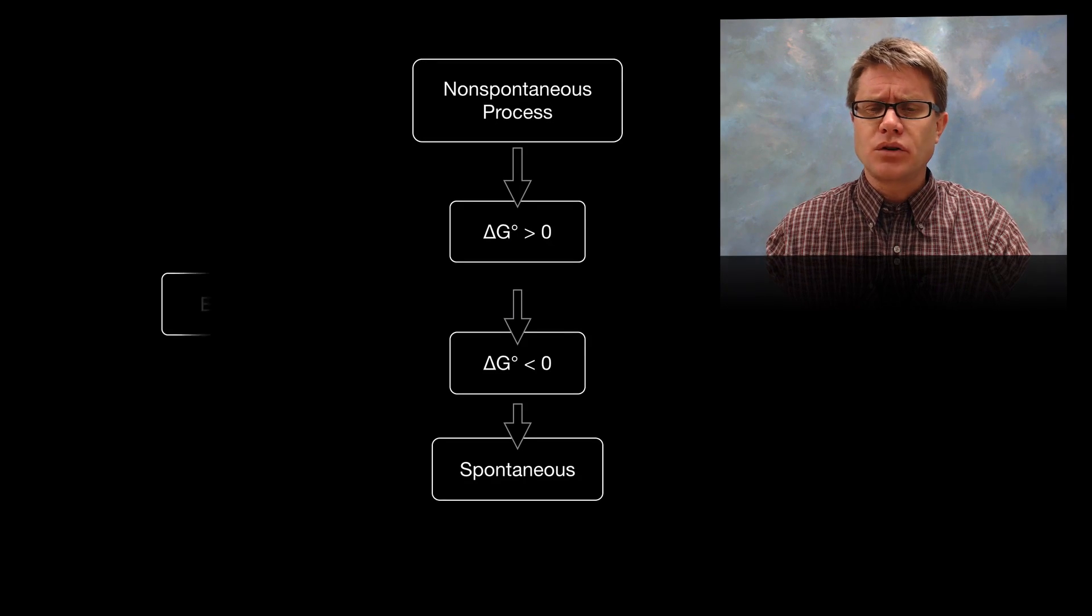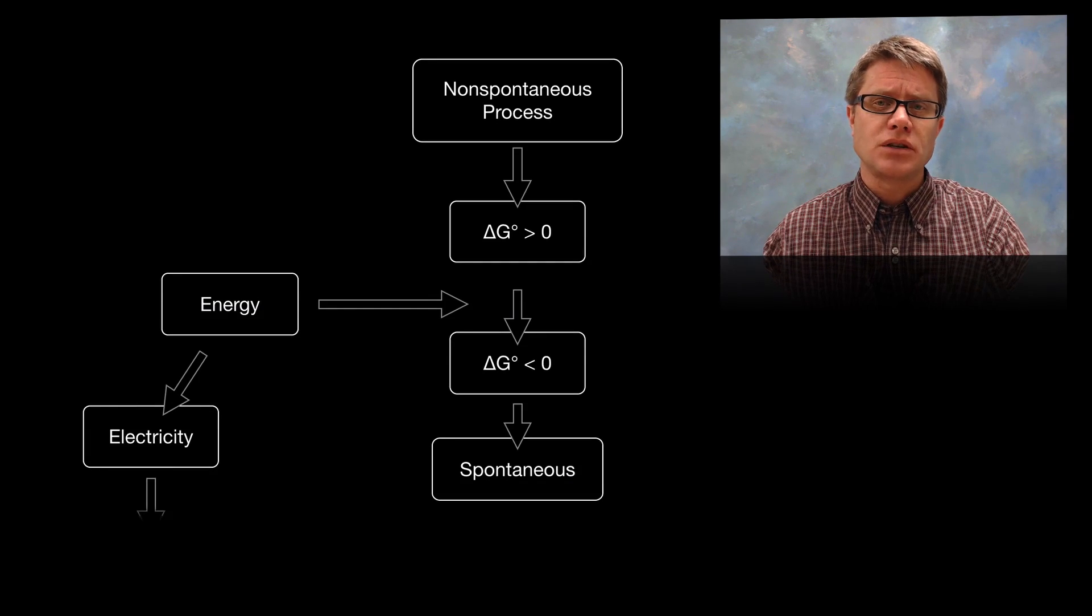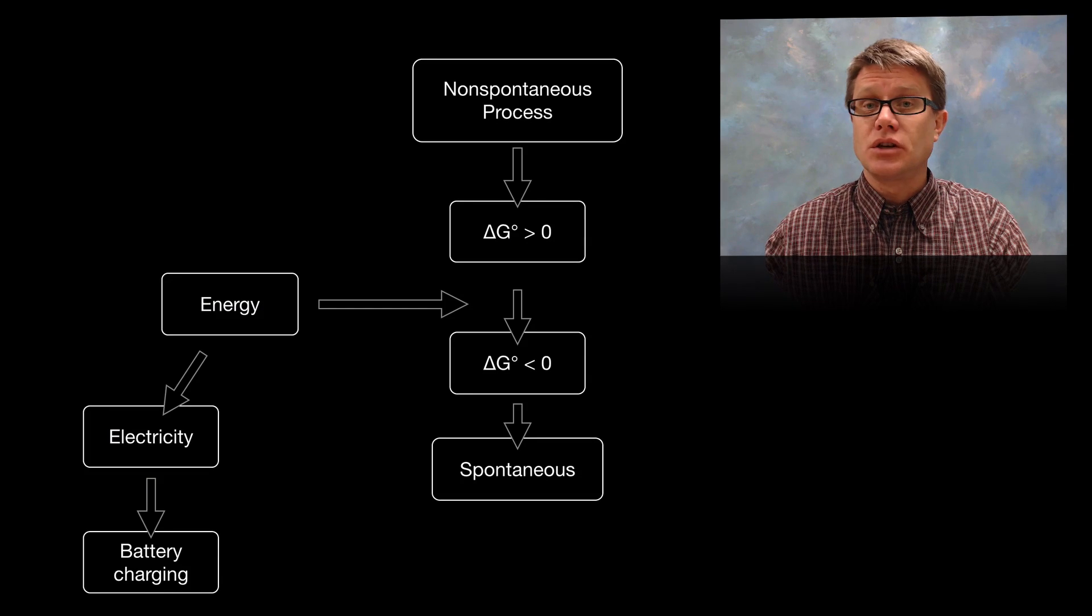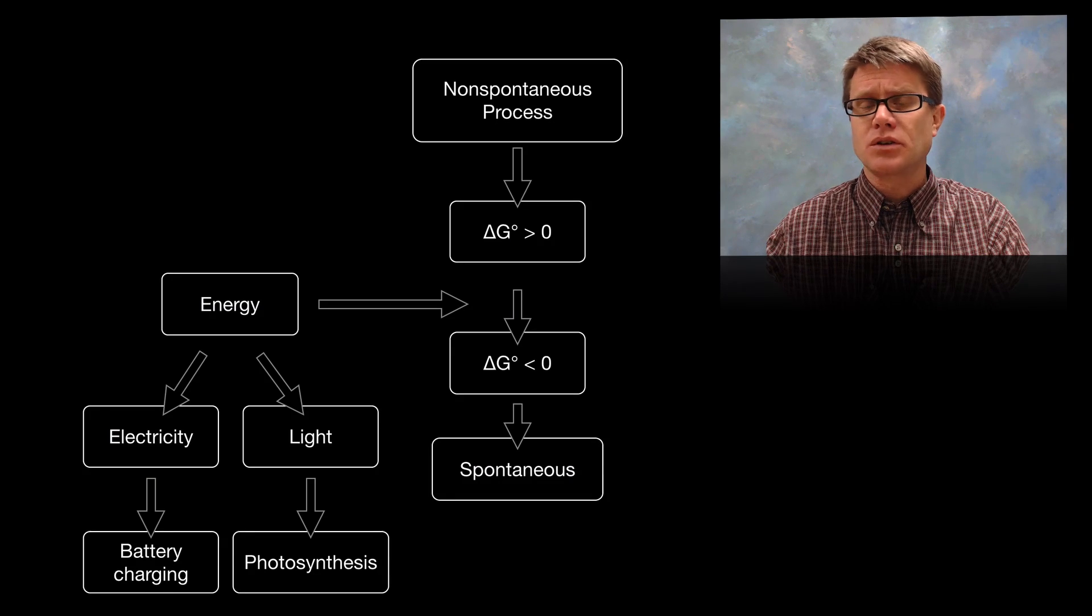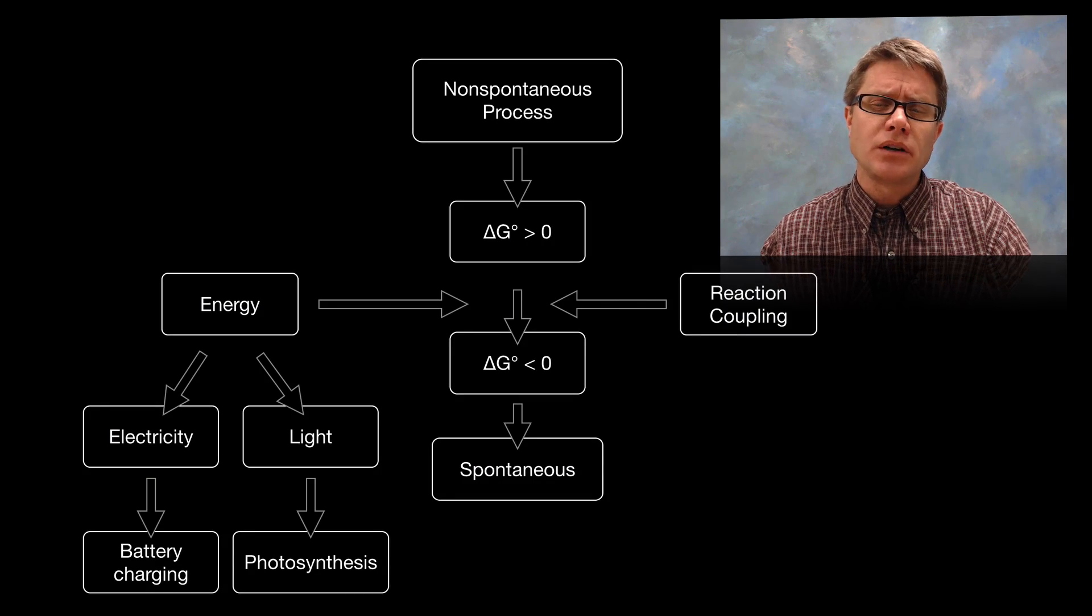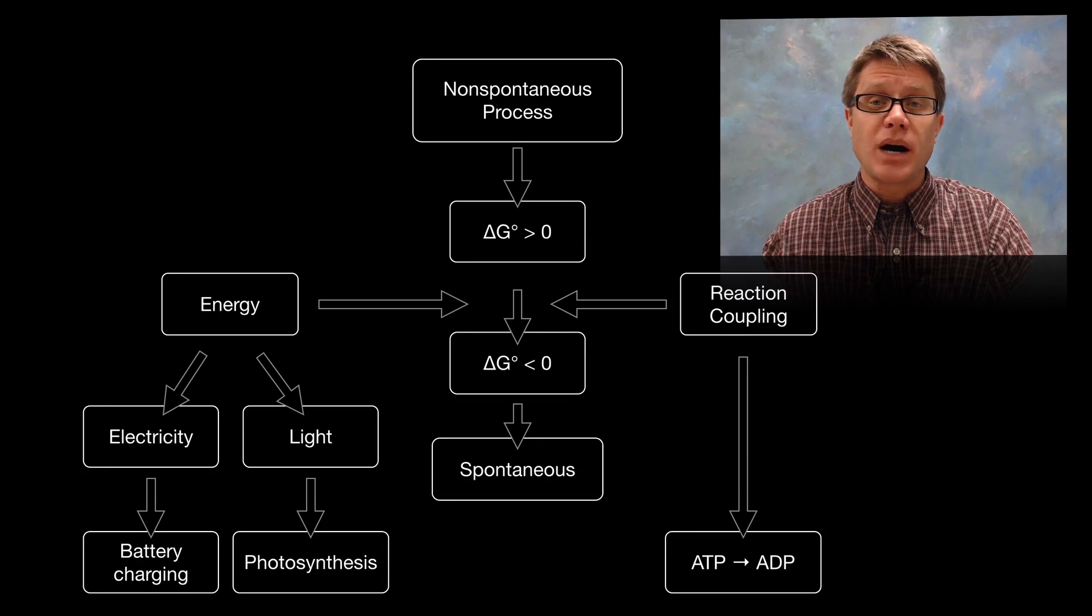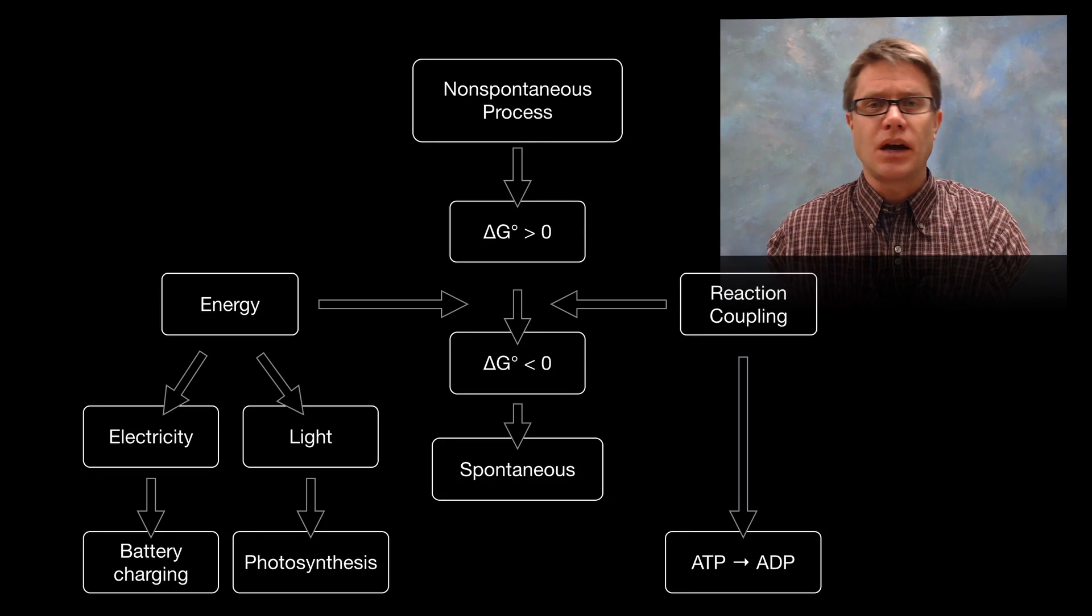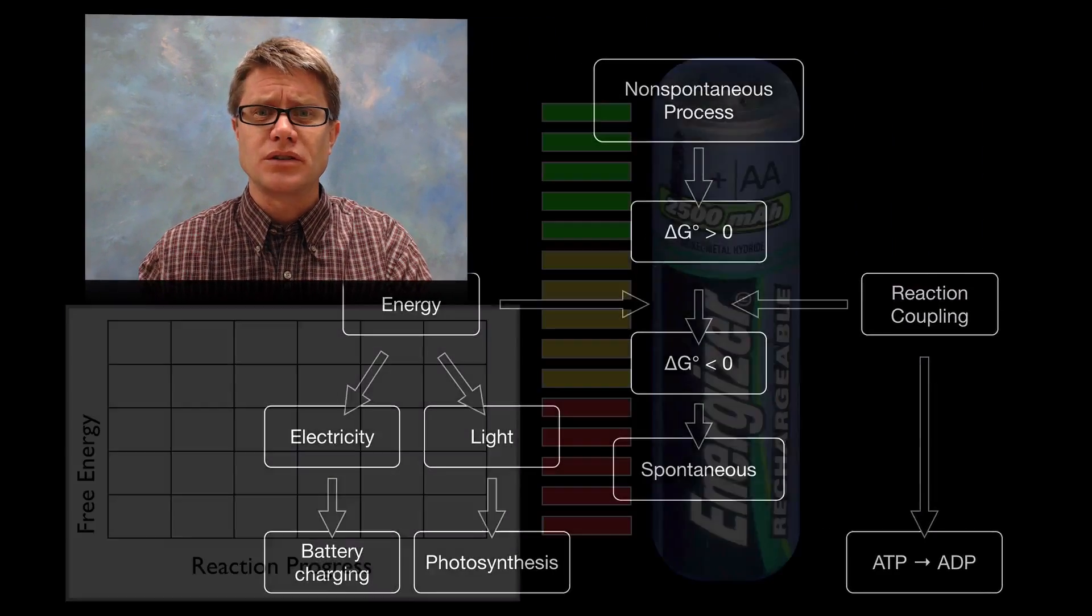In a non-spontaneous process our delta G is a positive value. Our goal is to make it a negative value, make it spontaneous. We can do that in one of two ways. We can take energy in from the surroundings, for example using electricity when charging a battery, or taking in light in photosynthesis. We can also couple it to another reaction or process. For example, in our body we constantly do this using a molecule called ATP. Every time we convert ATP into ADP we release a little bit of energy and we use that to do things like think and move and talk.